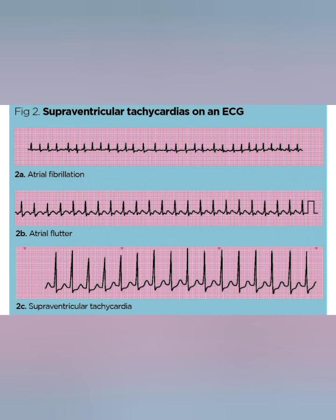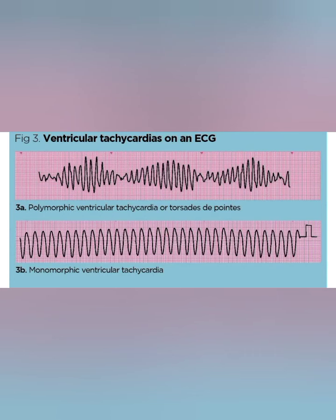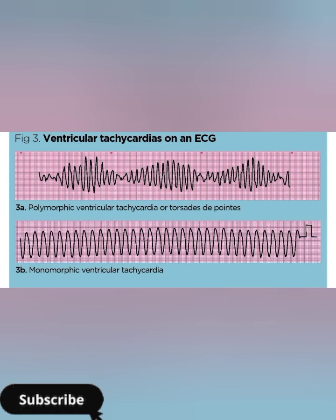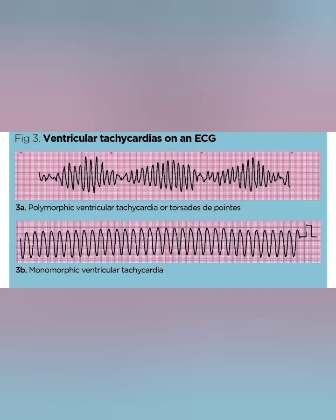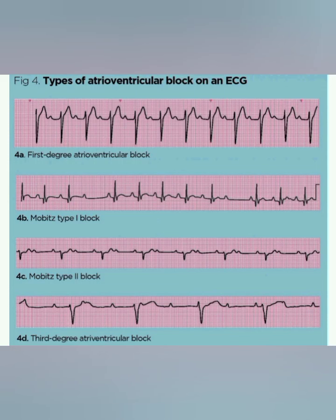The next picture is ventricular tachycardia on an ECG. This includes polymorphic ventricular tachycardia, also known as Torsades de Pointes, and monomorphic ventricular tachycardia. In this lecture we will discuss only the pictures and will not go into deep explanation for today.